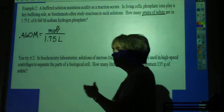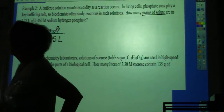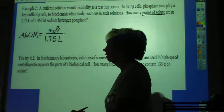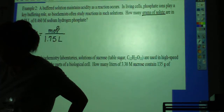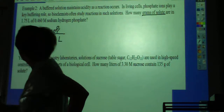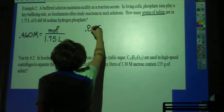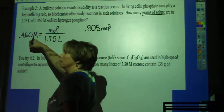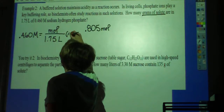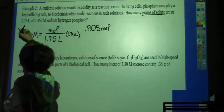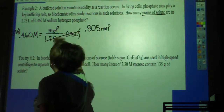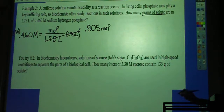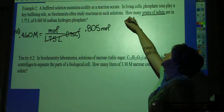Similar solution process as You Try It one — I multiply both sides by 1.75. The product of 1.75 and 0.460 is 0.805 moles. But my question is not how many moles; if it was, I would be done. My question is how many grams. So I have to convert 0.805 moles of sodium hydrogen phosphate to grams.